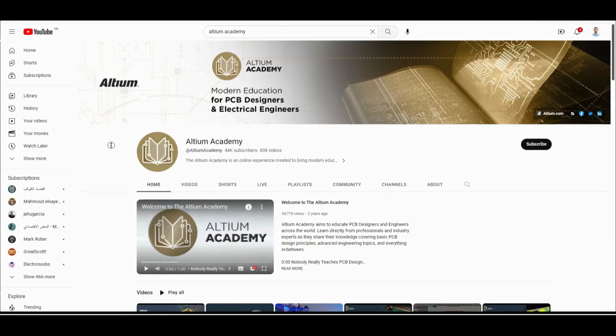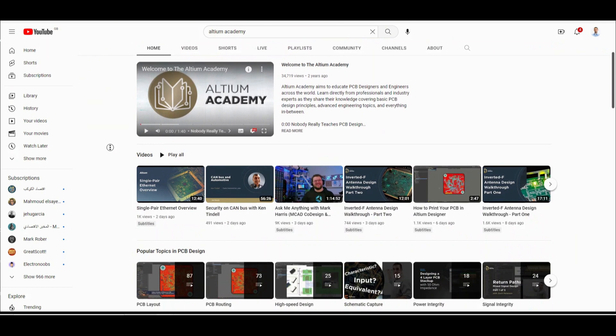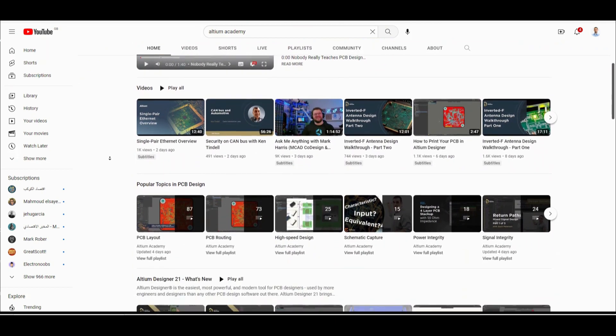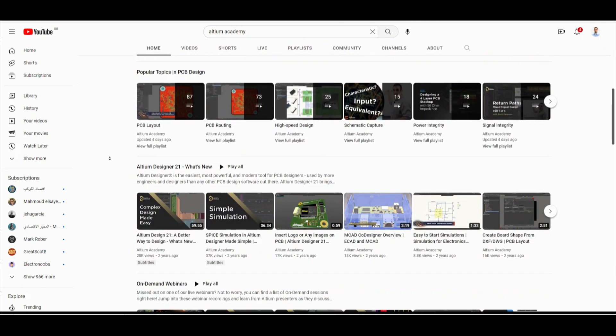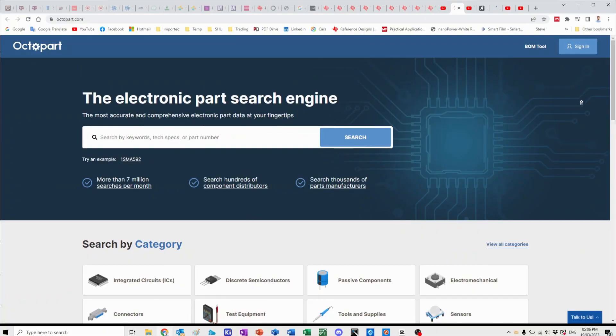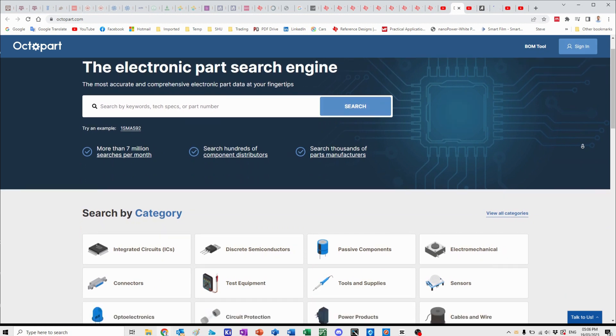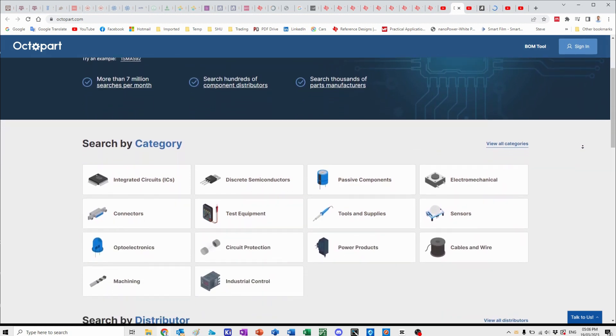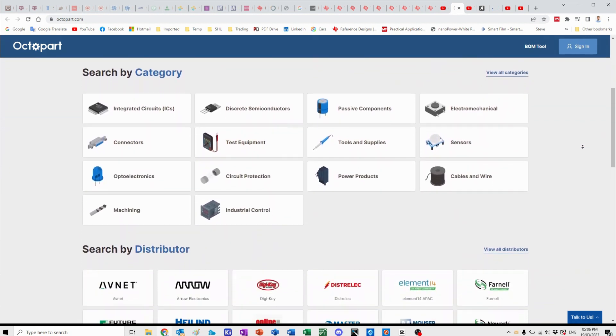And to learn more about Altium, you can access their YouTube channel Altium Academy, where they publish a lot of tutorials and hints. And also Altium has Octopart, which enables you to know the availability of some pieces and components and the footprint and other libraries that related to these components.